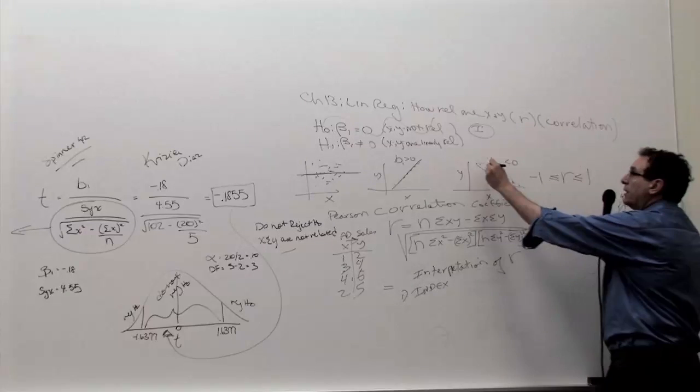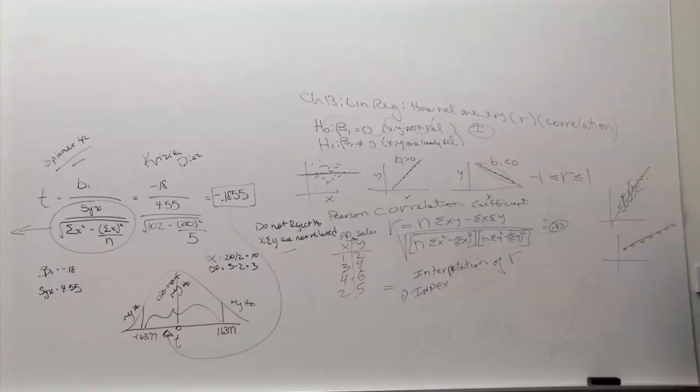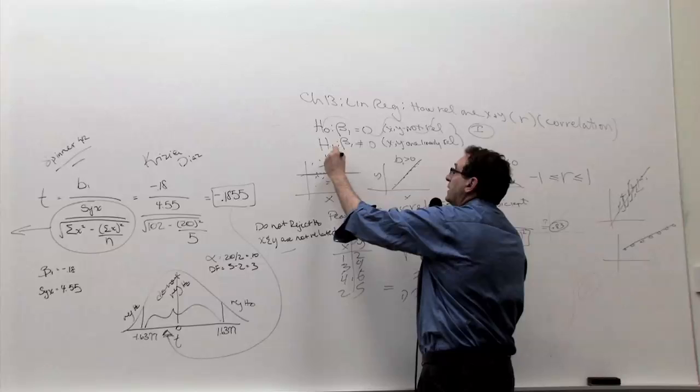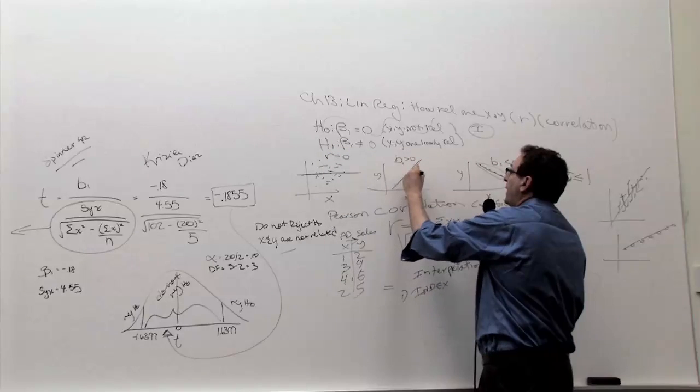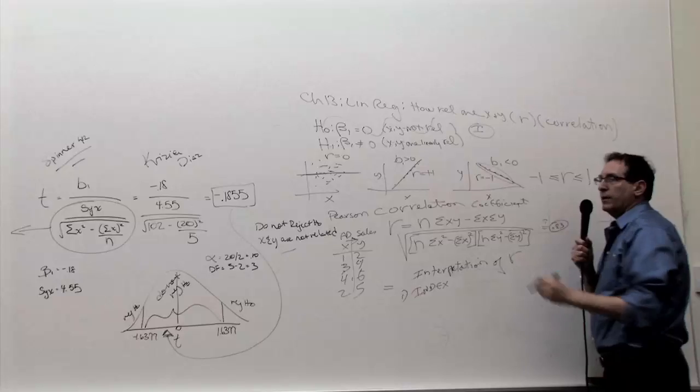If the dots are exactly along a line with a negative slope, then the correlation is minus 1. The other extreme is in the middle. If there's no relationship at all, the correlation will be 0. Here the correlation will be positive 1, here minus 1. That's worth getting down.